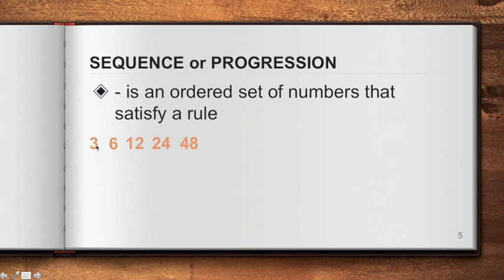If we have 3 plus 3 that gives you 6; 6 plus 6 gives you 12; 12 plus 12 gives you 24; and 24 plus 24 gives you 48. So if you add the number to itself then you get the next number in the sequence.